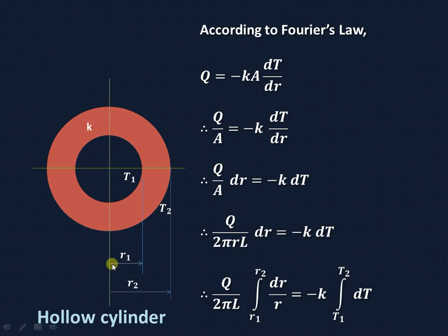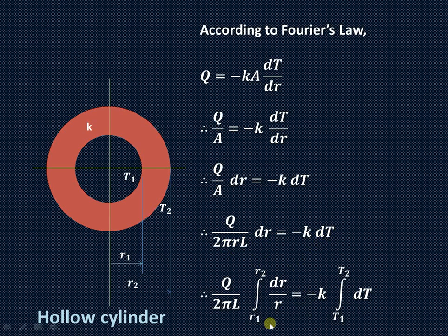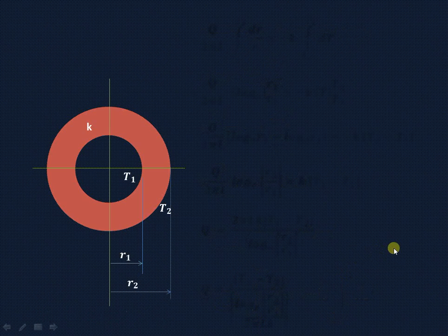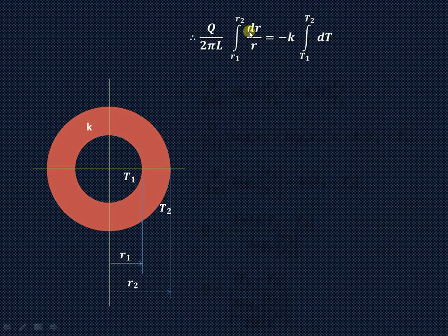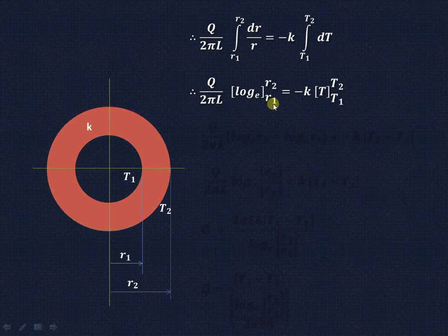The boundary conditions are: at R equal to R1, temperature is T1, and at R equal to R2, temperature is T2. Integrating, we get dr upon R from R1 to R2 and dT from T1 to T2 respectively. The integration of 1 upon R is log R with limits from R1 to R2, and integration of dT is T with limits from T1 to T2.